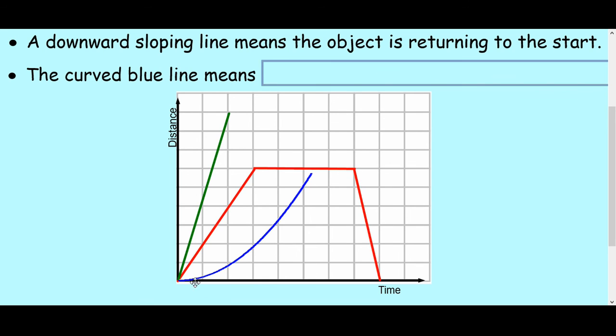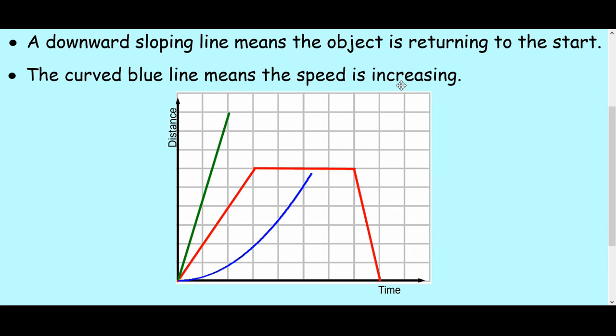Okay, the curved line is not really where we're going to be talking about it, but the distance is changing over time with a curve instead of a straight line. This actually means the speed is increasing, which is to do with acceleration, but something we are not really going to look at.